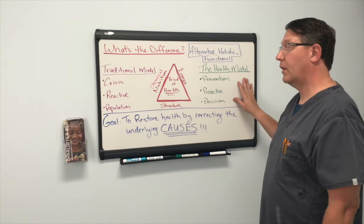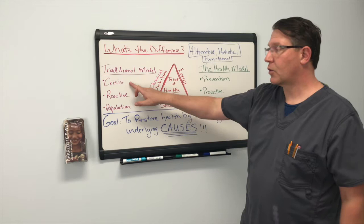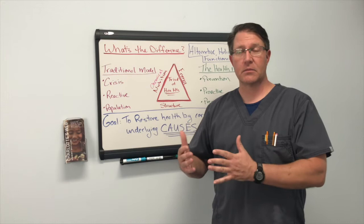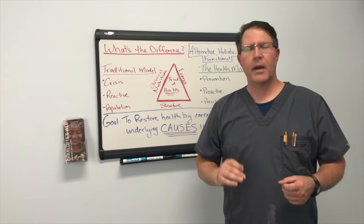Now let's compare the traditional model to the healthy model. There are three bullet points I want to go over in today's video. The first one is crisis — crisis care, crisis intervention. Please make no mistake: here in the United States we have one of the best crisis intervention or emergency systems in the world.